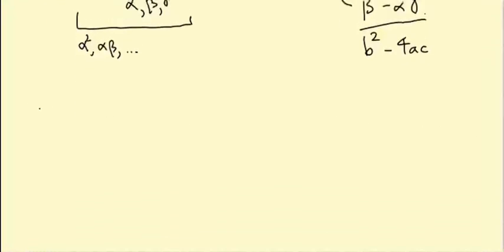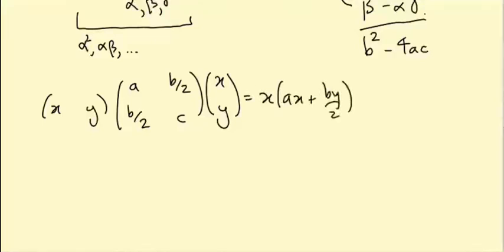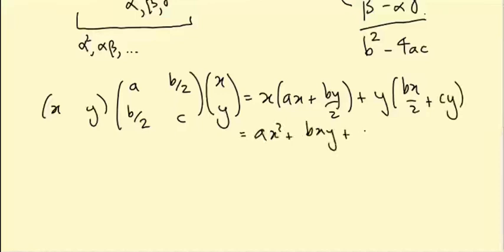Let's start from scratch. If I have a quadratic polynomial in x and y, I can write it as the row vector (x, y) times the symmetric matrix with entries a, b/2, b/2, c, times the column vector (x, y). Multiplying that out gives x(ax + by/2) + y(bx/2 + cy), which equals ax² + bxy + cy². So we can identify quadratic forms in x and y with 2×2 symmetric matrices.